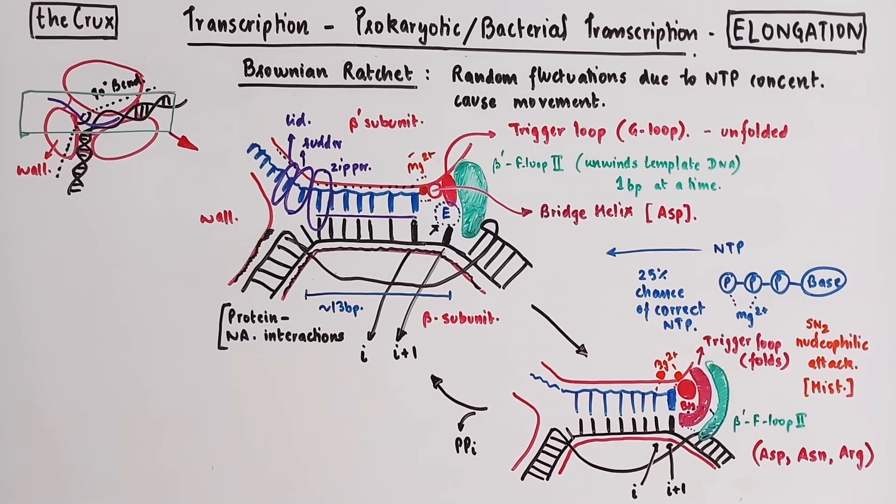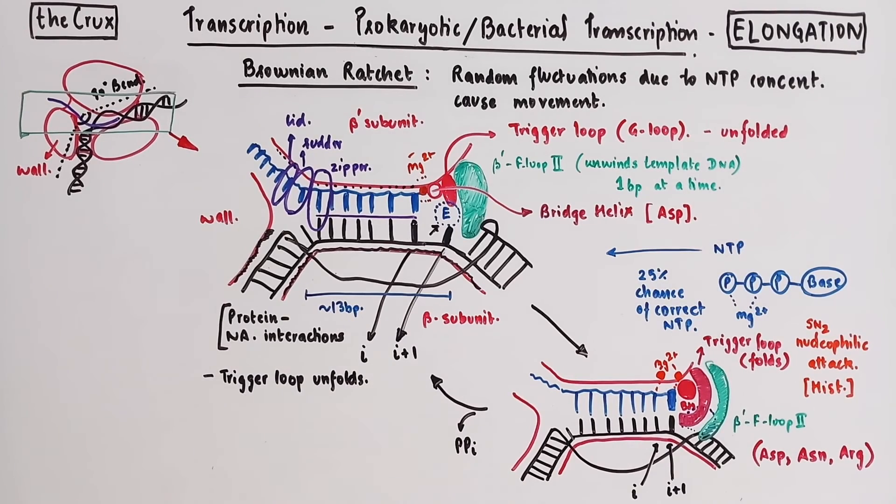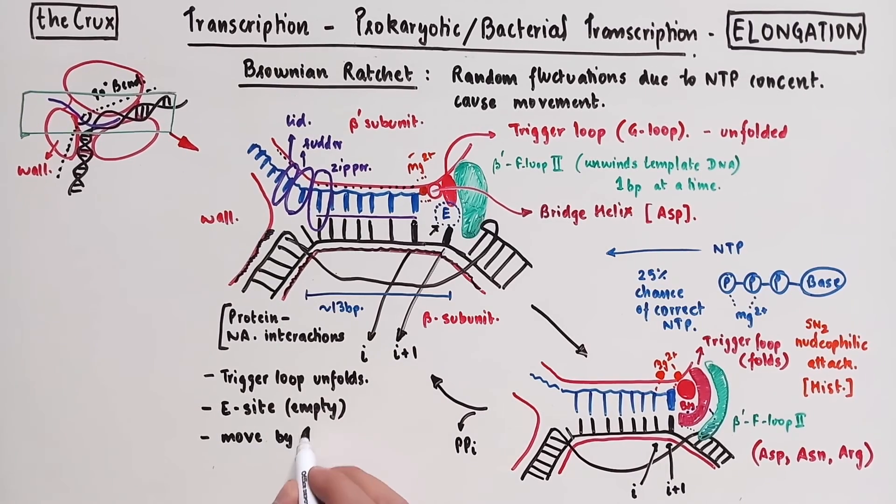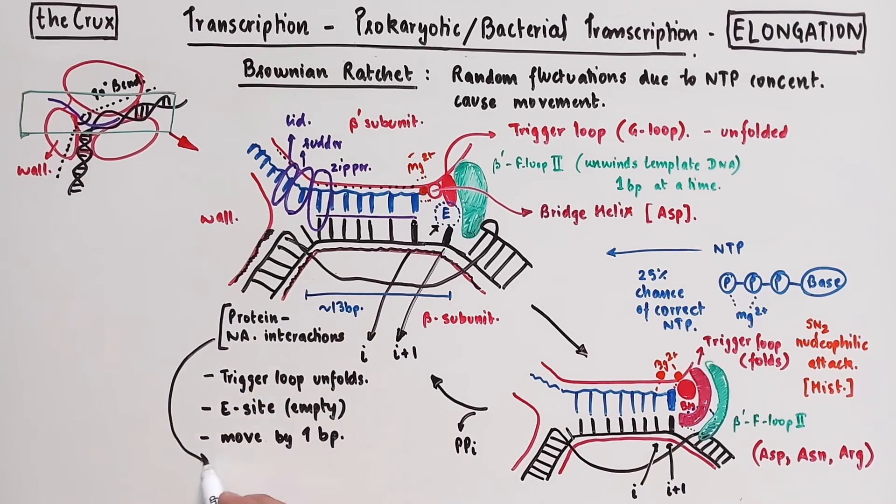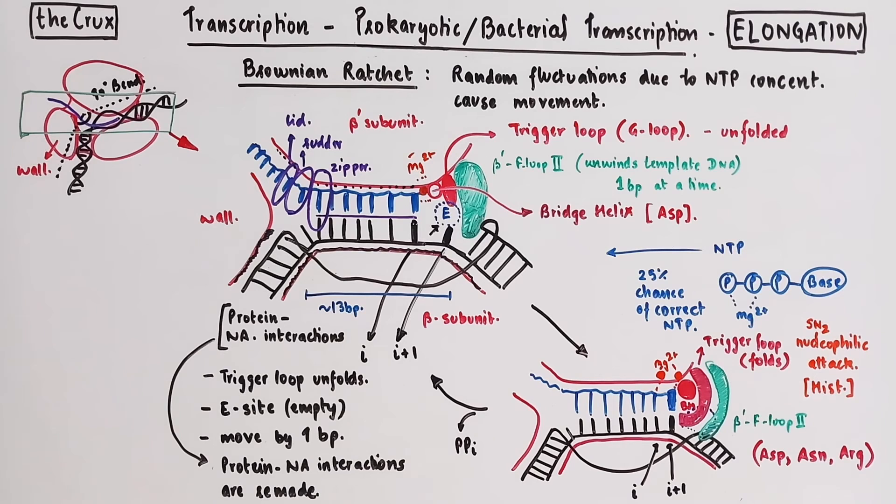The enzyme can move to the next base. During this transition, the trigger loop unfolds back, the E-site is accessible again, the DNA is unwound by one base, and all the protein-nucleic acid interactions are re-established. The enzyme therefore moves between these two states by using the accessibility of the E-site as a ratchet. The energy from the pyrophosphate release is used to cause the necessary conformational changes. And that's the Brownian model of elongation.